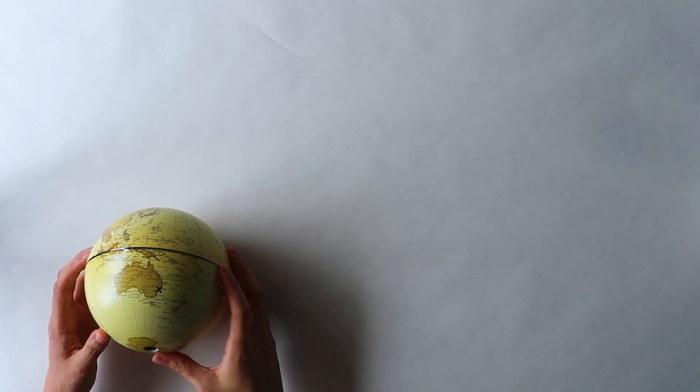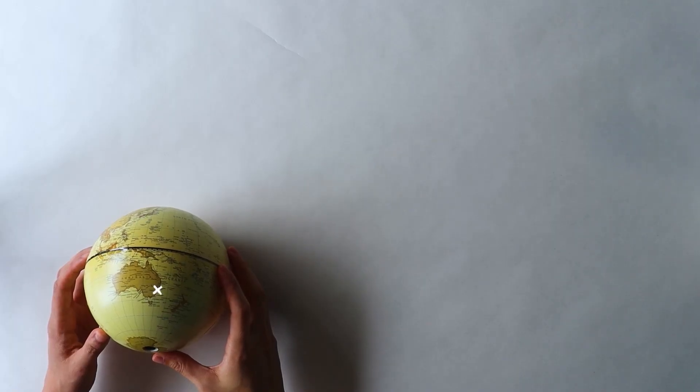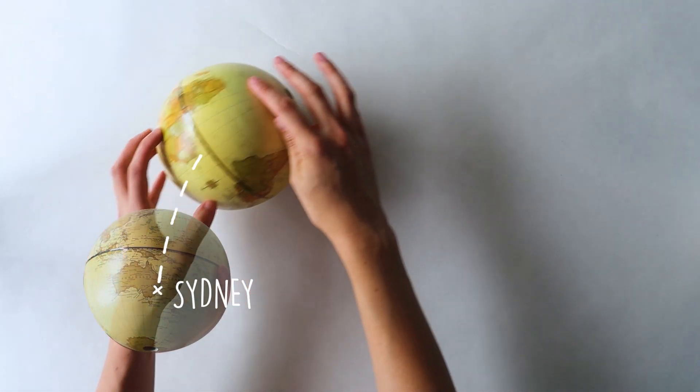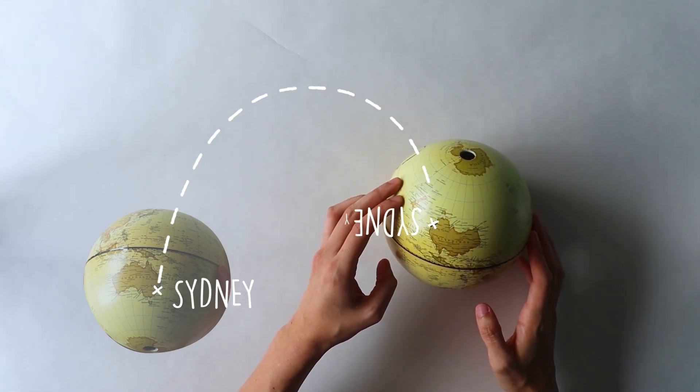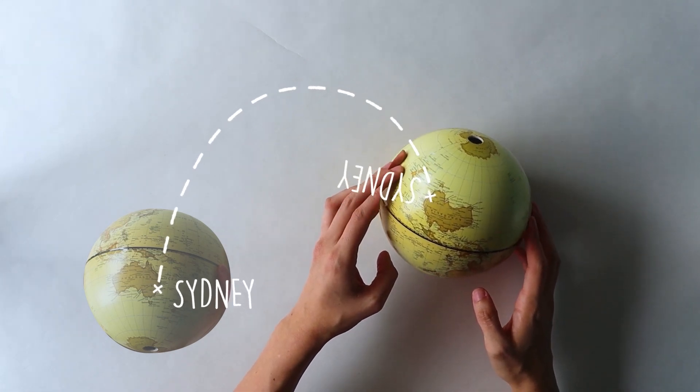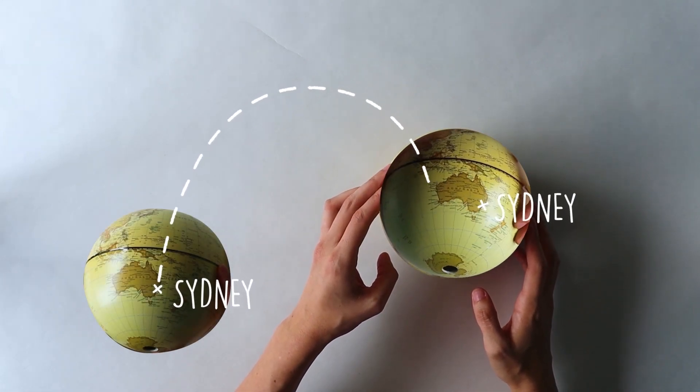An easy way to understand this is using a globe. Let's say my trajectoid path starts here, in Sydney. By the time the first period of my trajectoid roll is finished, it's not enough for me just to end up back in Sydney. The globe also has to be the right way up, just like before I started rolling it.